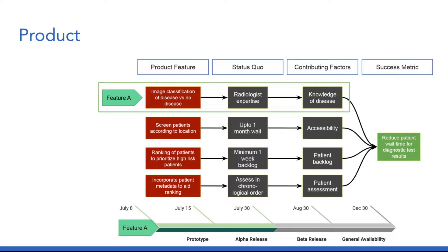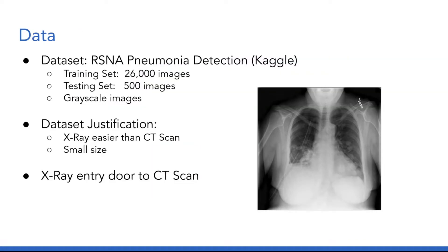Finally, patients are assessed in chronological order based on their test date. Our product feature should use patient metadata to aid in the ranking of the patient log. For our data, we obtained our dataset from a Kaggle competition for pneumonia detection. It consists of grayscale x-ray images. We chose this dataset because it was smaller in size and it was easier to work with x-ray images.